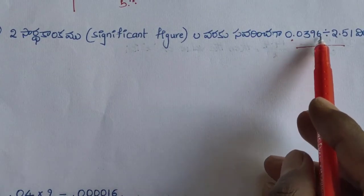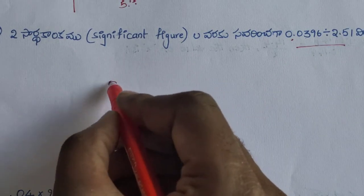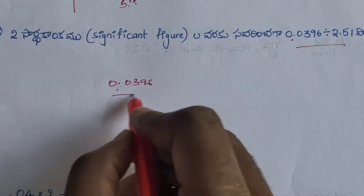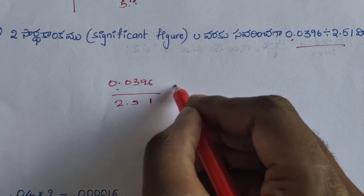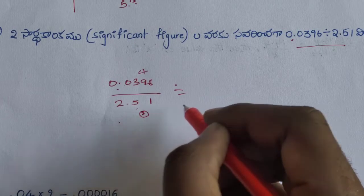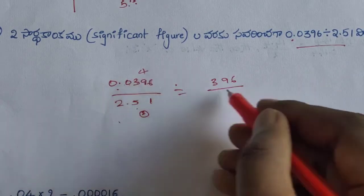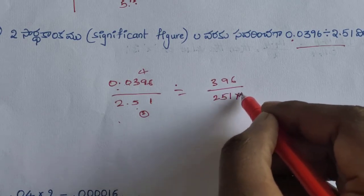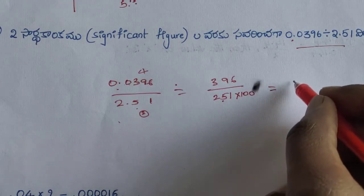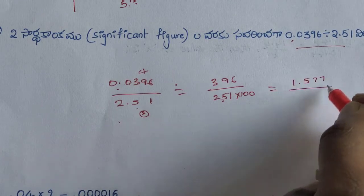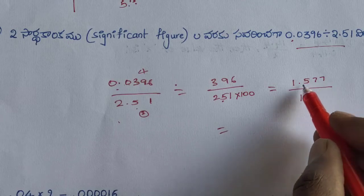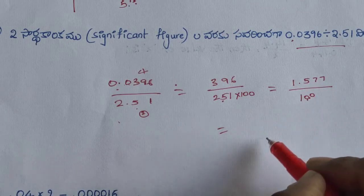0.0396 divided by 2.51. Rewriting: 0.396 by 2.51. Now look at the decimal point placement — count 1, 2, 3, 4 places. Result is approximately 1.57, 7. Look at this point: put a decimal point back accordingly.